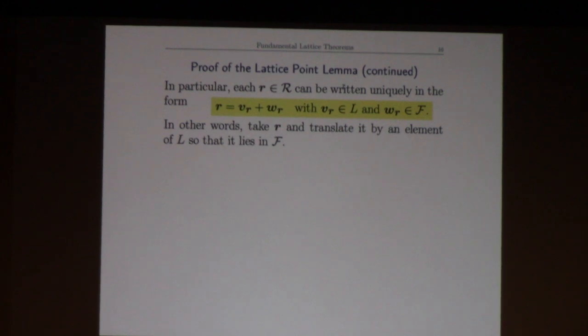That means every point in the region R, actually every point in space, is sitting in one of these translated fundamental domains. So it looks like a lattice vector v_r plus a fundamental domain vector w. If you make the fundamental domains where you take the bottom left sides to be closed and the top and right sides to be open, it'll actually be unique. So we take r, we translate it by an element of the lattice until it lies in the fundamental domain. Every point in the region has been decomposed as lattice vector plus fundamental domain vector.